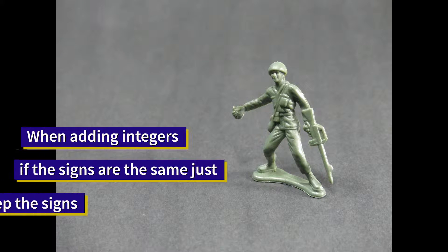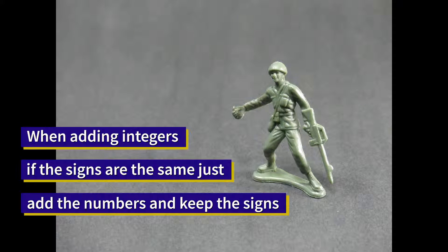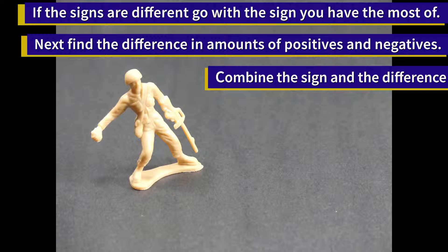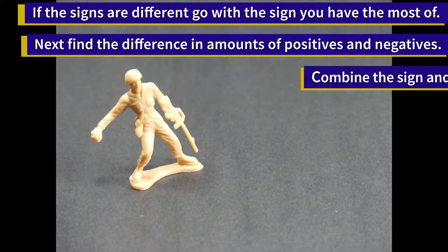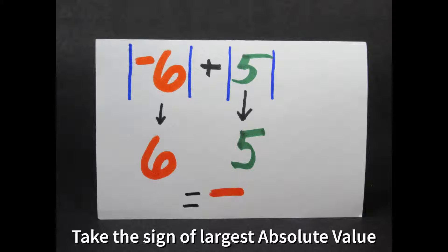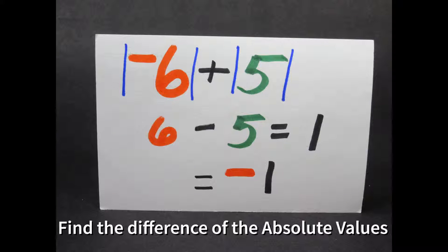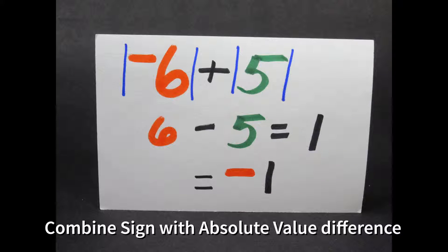The rules for adding integers are pretty straightforward. If the signs are the same, just keep the sign and add the numbers. If the signs are different, you take the sign of whichever you have the most of, and then find the difference in the amounts of positives and negatives and combine those together. What's really going on is we're taking the sign of the largest absolute value, then subtracting the two absolute values to get the answer.